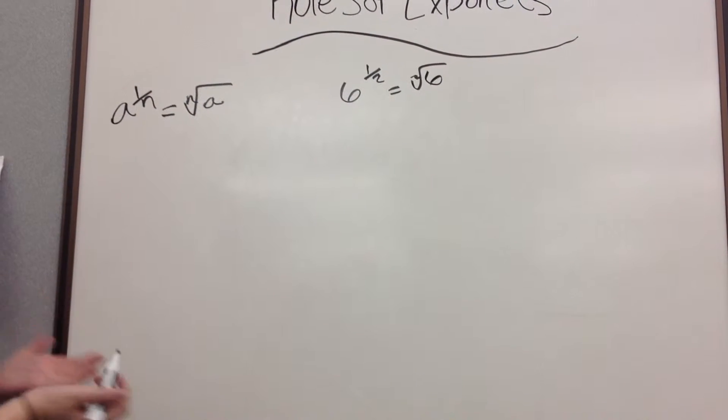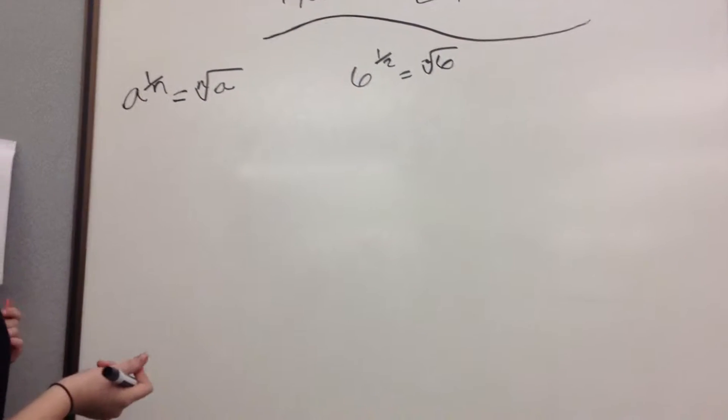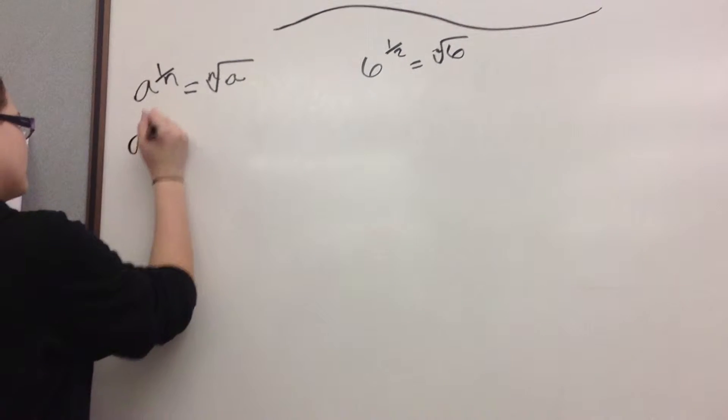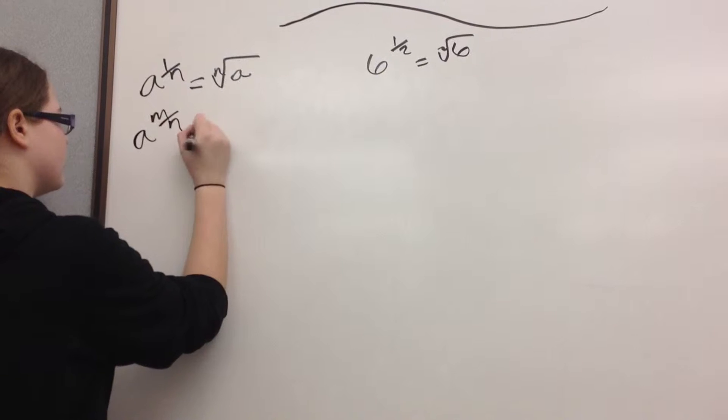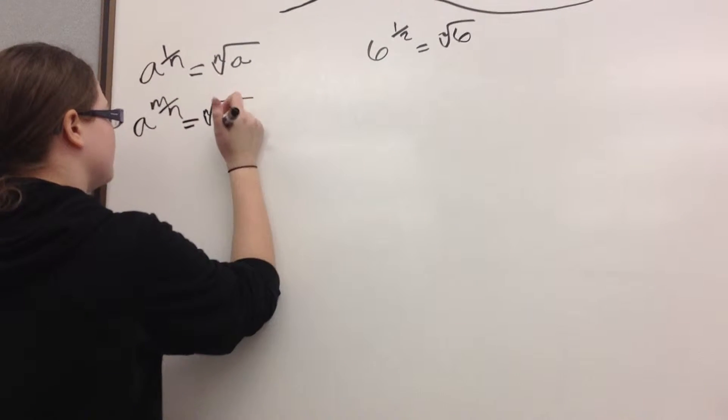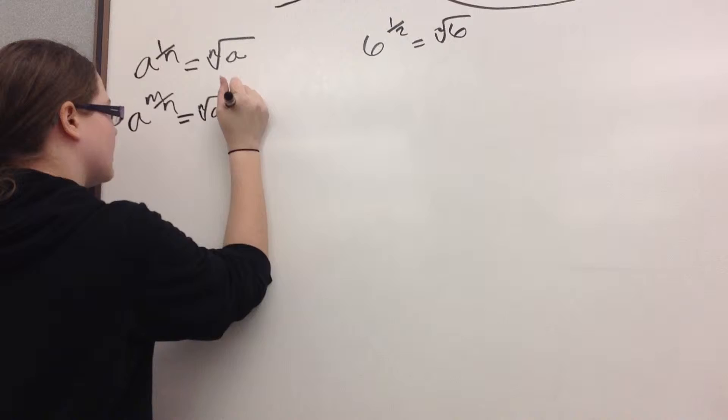So another way is you get to have a to the m over n. That is equivalent to the n root of a to the m.